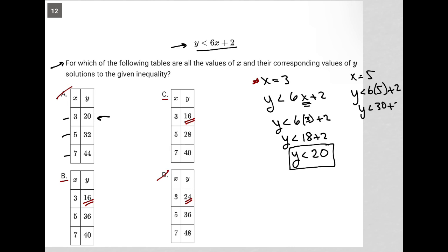Y is less than 30 plus 2, therefore y is less than 32. So when x equals 5, y should be less than 32.